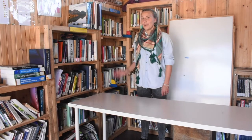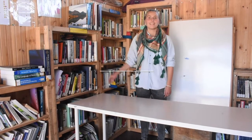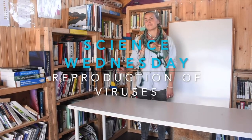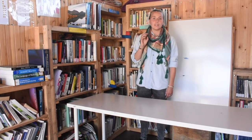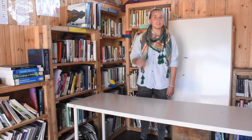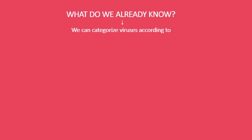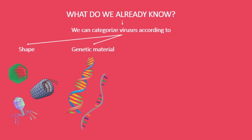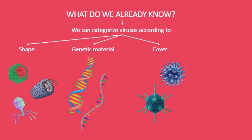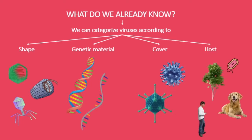Hello everybody! Welcome back! Last class we have seen what a virus is and what shapes it can have. What do we already know? There are different types of viruses according to their shape, their genetic material, their cover, and their host.